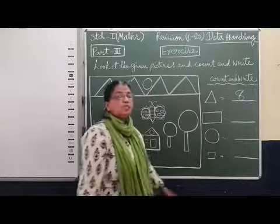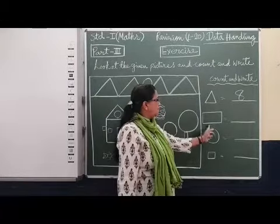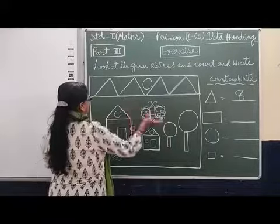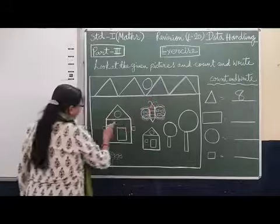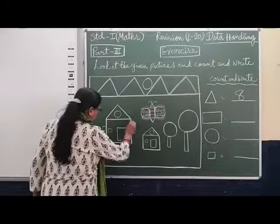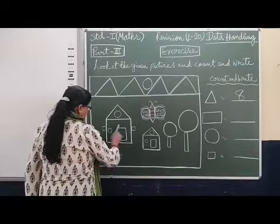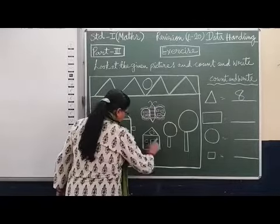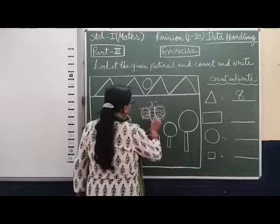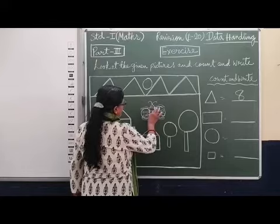Next, rectangles — shapes with two standing lines and two sleeping lines where opposite sides are equal but not all four lines equal. There are no rectangles in the mountains. In the house, the door is a rectangle. Counting through the pictures: one, two, three, four, then five, six in the butterfly — seven, eight, nine.